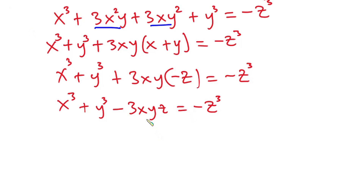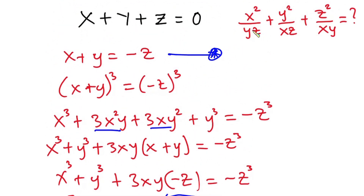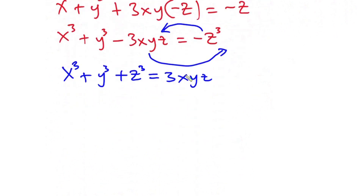From here I'm going to move terms across. So we have x to the third power plus y to the third power plus z to the third power is equal to 3xyz. Now let's go back to our original expression. Here we have yz, we have xz, then xy. So let's divide each side by xyz.